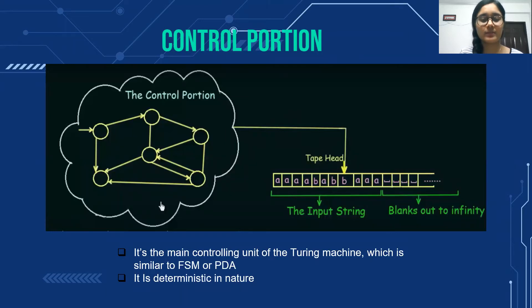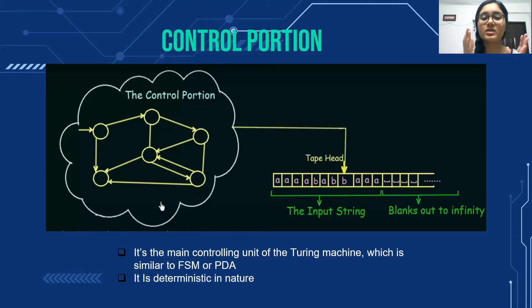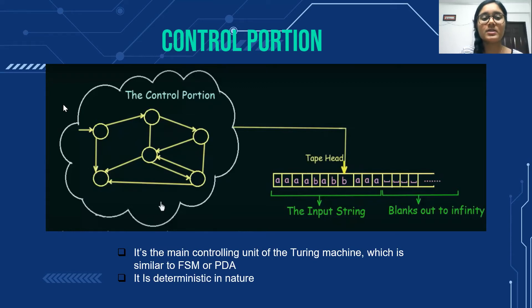After the tape, the control portion of the Turing machine is also a very important part. The control portion is basically the control unit of the Turing machine. It controls all the programs and functions of a Turing machine and is connected to the tape head. It is similar to a finite state machine or a pushdown automata, but it is not exactly those — it has similar properties. It is deterministic in nature and controls all the functions of the Turing machine.